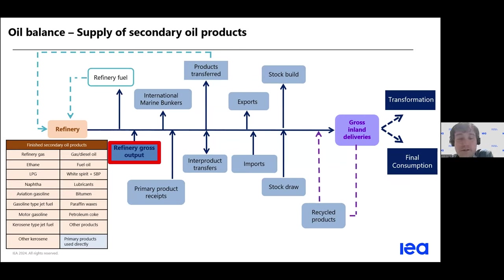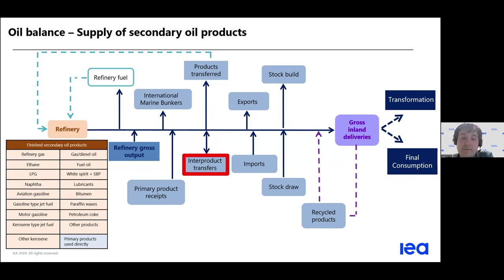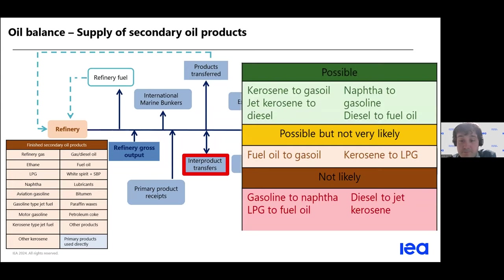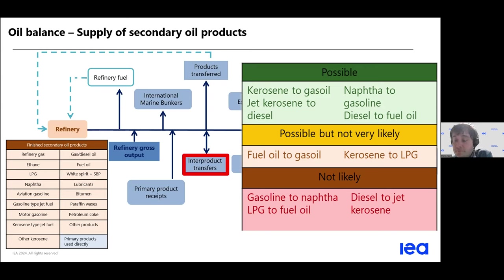So of course we have outputs. Some of this output can go directly back to the refineries — for example, refining gases used as fuel for the refining processes themselves. There can be transfers of secondary products from one category to another, because a product can change specification. There can be evaporations and chemical transformations which make a product change categories. However, not all transfers are possible. For example, kerosene can become gasoline or LPG, but it's very unlikely that LPG becomes fuel oil.